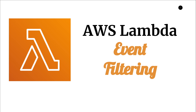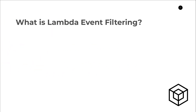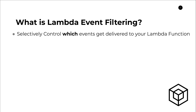This is going to be a two-part video series. In part two I'll walk you through how to set event filtering up in the AWS console. So let's jump right into it. First of all, what is Lambda event filtering? This was a brand new announcement that came out of re:Invent 2021 and it allows you as a Lambda application owner to selectively control which events get delivered to your Lambda function.